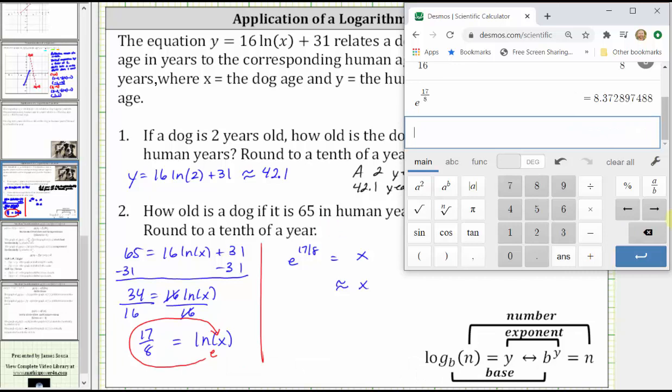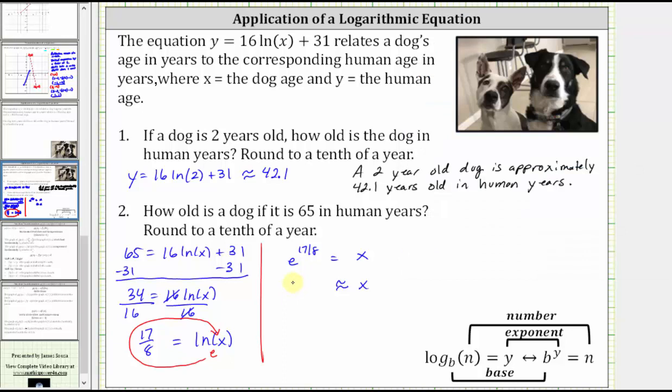Because we have a seven in the hundredths place value, we round up to 8.4. So now we know if a dog is 65 in human years, the dog is approximately 8.4 years old.